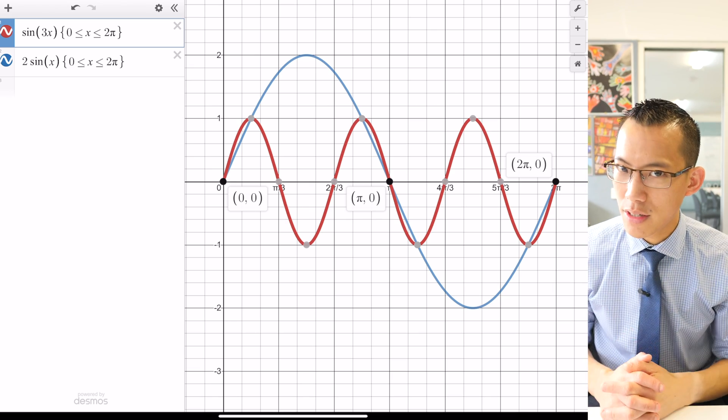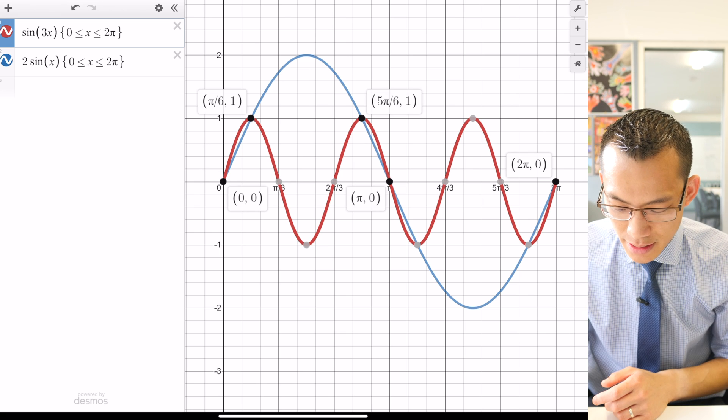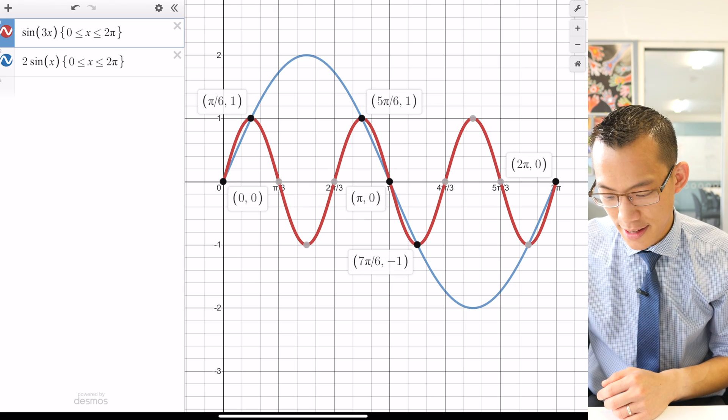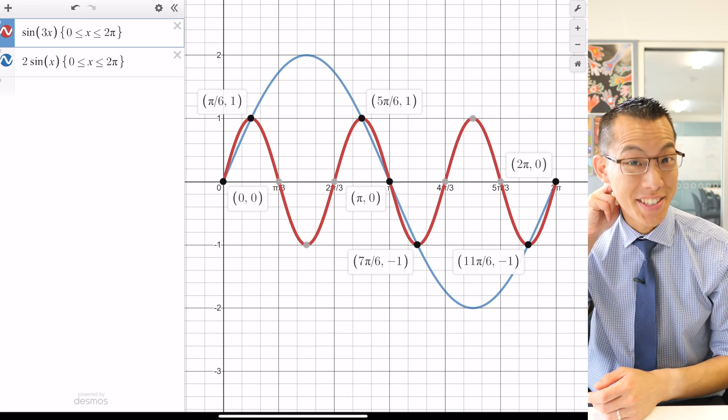And then I've got four more solutions that I'm anticipating. So here comes π/6, 5π/6, there's another point of intersection down there, 7π/6, and then the last one, 11π/6. So sure enough, seven solutions.